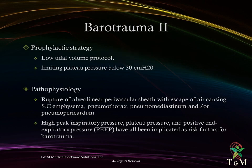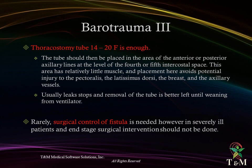Prophylactic strategy includes using low tidal volume protocol and limiting plateau pressure below 36 cmH₂O. Pathophysiology of barotrauma involves rupture of alveoli near perivascular sheath with escape of air causing subcutaneous emphysema, pneumothorax, pneumomediastinum, and/or pneumopericardium. High peak inspiratory pressure, plateau pressure, and positive end-expiratory pressure are all risk factors. A small bore tube drainage of 14 to 20 French is sufficient, placed along the anterior or posterior axillary lines at the fourth or fifth interspace. The air leak usually stops and removal of the chest drain is best left until weaning from the ventilator; surgical control of fistula is rarely needed and should not be done in severely ill patients with end-stage lung disease.